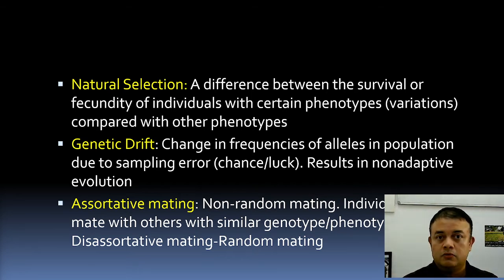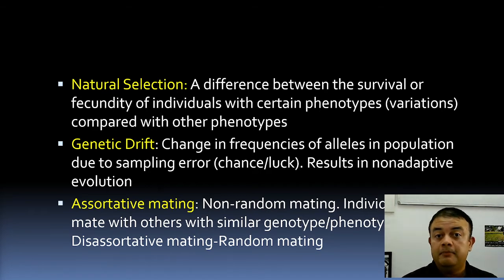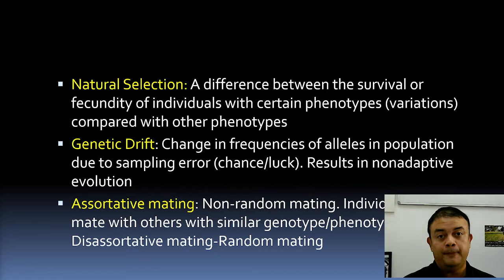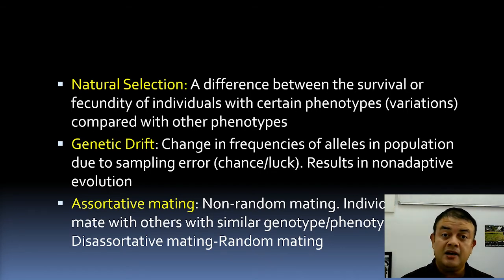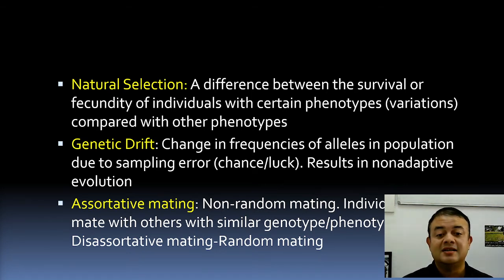A long-beaked finch may prefer to mate with a long-beaked female finch — that is assortative mating. Non-random mating means individuals tend to mate with others of similar genotype or phenotype. This can be a driving force for speciation if it continues. The antonym of assortative mating is disassortative mating, which is completely random.